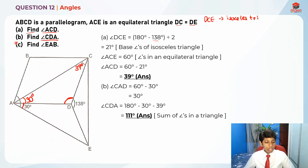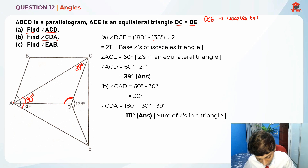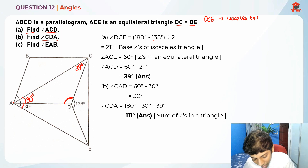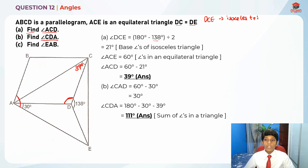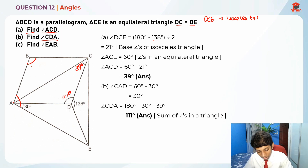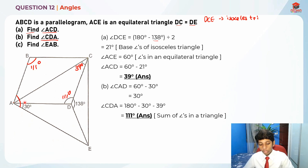Now for Part C, the last part — they are asking us to find angle EAB. Angle EAB is this really big angle over here. Angle CDA is 111 degrees, and since opposite angles of a parallelogram are equal, the opposite angle is also 111 degrees — though this isn't directly needed to solve this question.